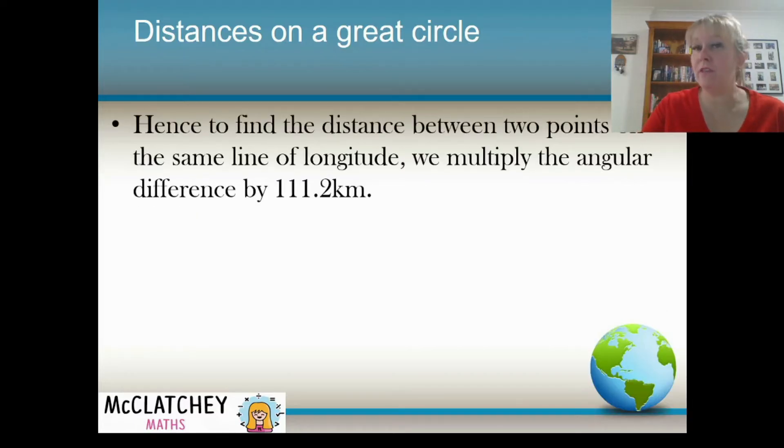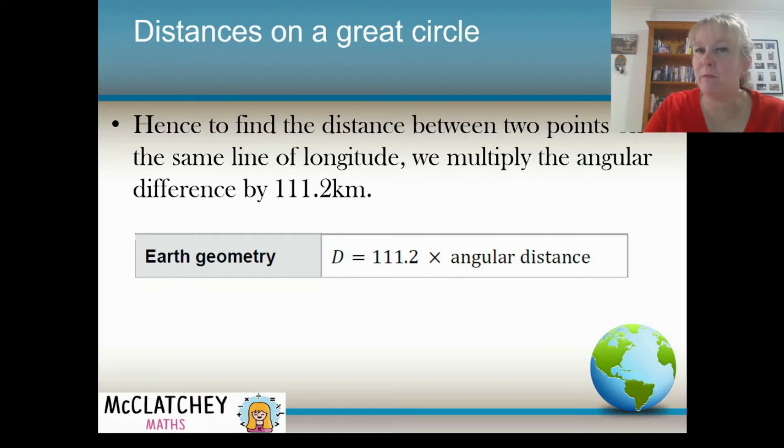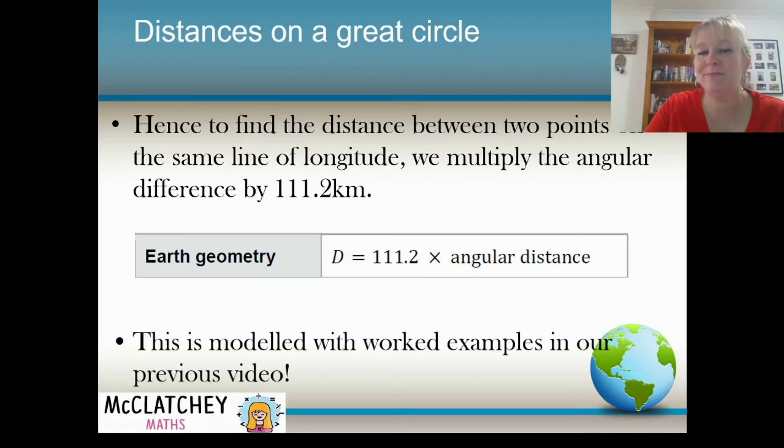Okay, so if we know the distance of one degree on that great circle, we can find any distance on the great circle, whether it's five degrees, 100 degrees, or 359 degrees, and we can work out what that would be. And here's the formula from the Queensland formula sheet. And that's where we get that magic number from. You might be required to memorize the formula, however, in your state. So it's always a good idea to know where it comes from and how to use it. And we modeled how to use it in our previous video.